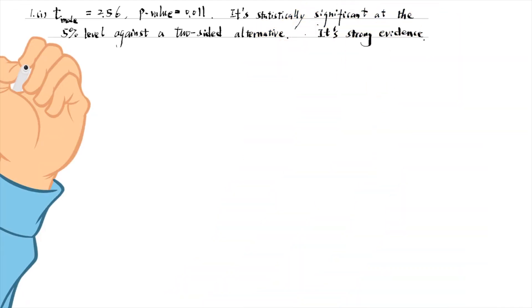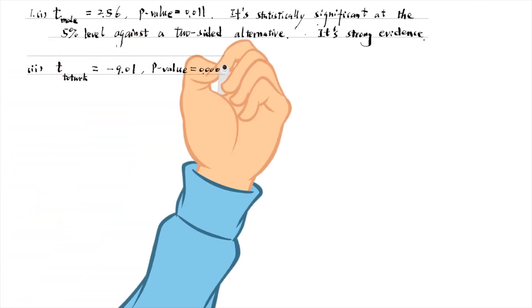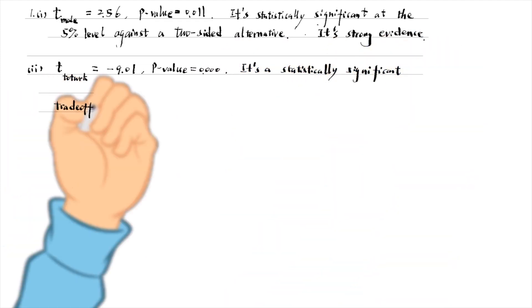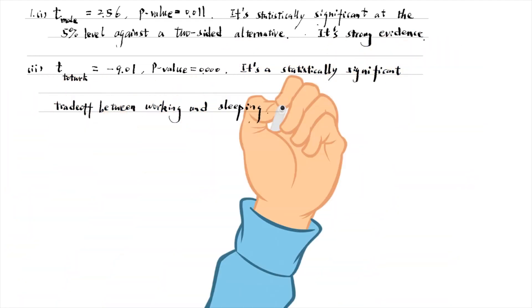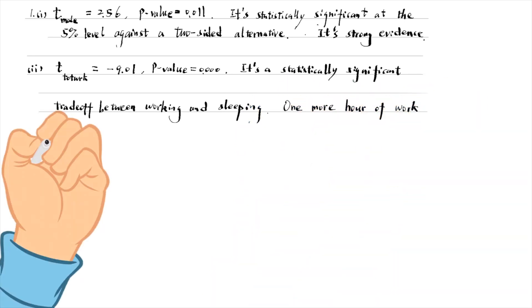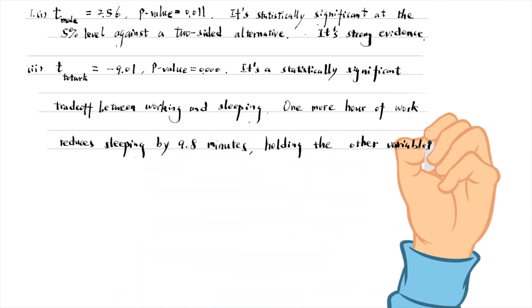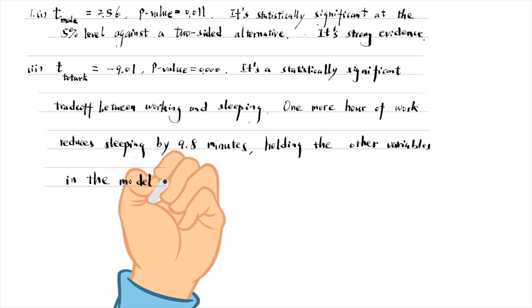For the second question, the t-statistic for total working time is minus 9.01 and its p-value is 0 to three decimal places. It is a statistically significant change of between working and sleeping. One more minute spent working leads to 0.16 minutes less spent sleeping, or one more hour of work reduces sleeping by 9.8 minutes, holding the other variables in the model fixed.